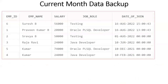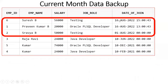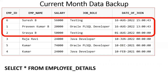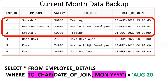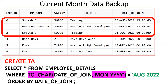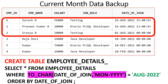Now we will see current month data backup. I want to back up August month data — there are three records: two from 16th August and one from 1st August. If I put SELECT * FROM employee_details, it will project all records, but I need to filter. So WHERE TO_CHAR(date_of_joining, 'YYYYMM') = TO_CHAR(sysdate, 'YYYYMM') — it will extract only the three August records. On top of that, using the CTAS concept: CREATE TABLE employee_details_backup_August_2022. Hope this is clear.